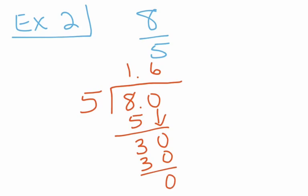That tells us that we are done. So in this problem, we see that 8 over 5 is equal to 1.6. Again, those two numbers are equal to each other. They are the same exact value. They are just written in different forms.